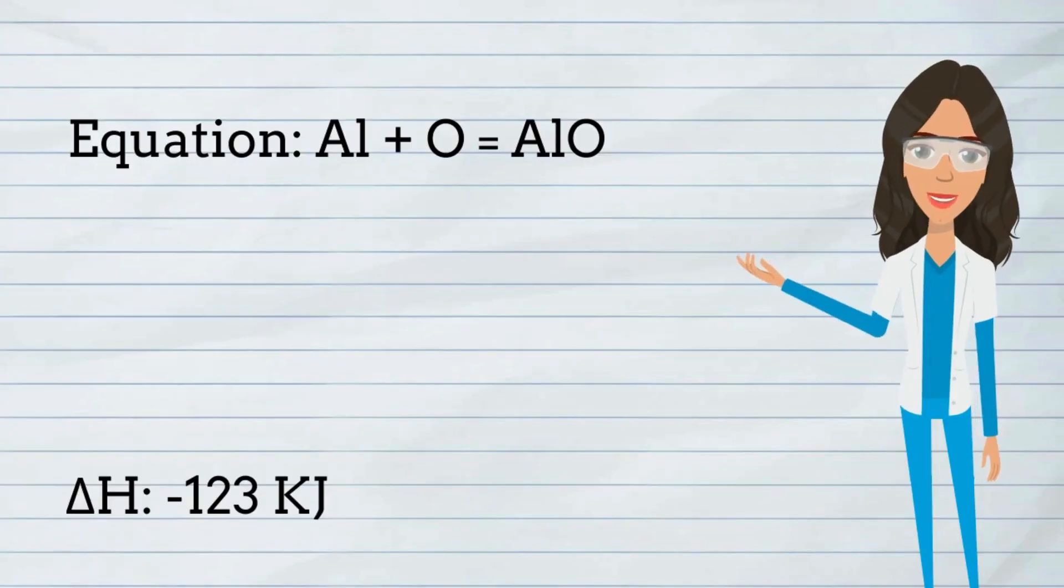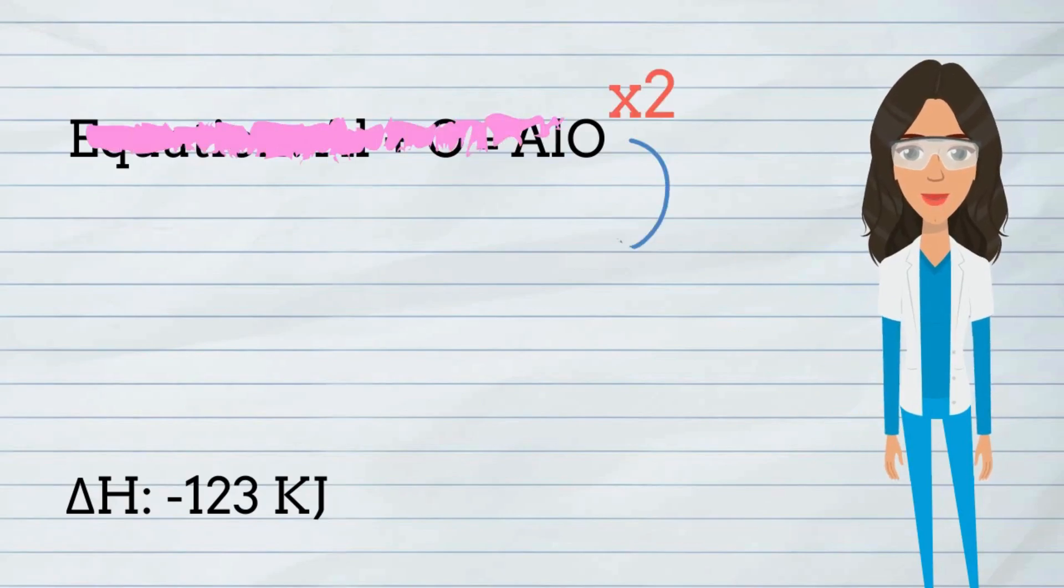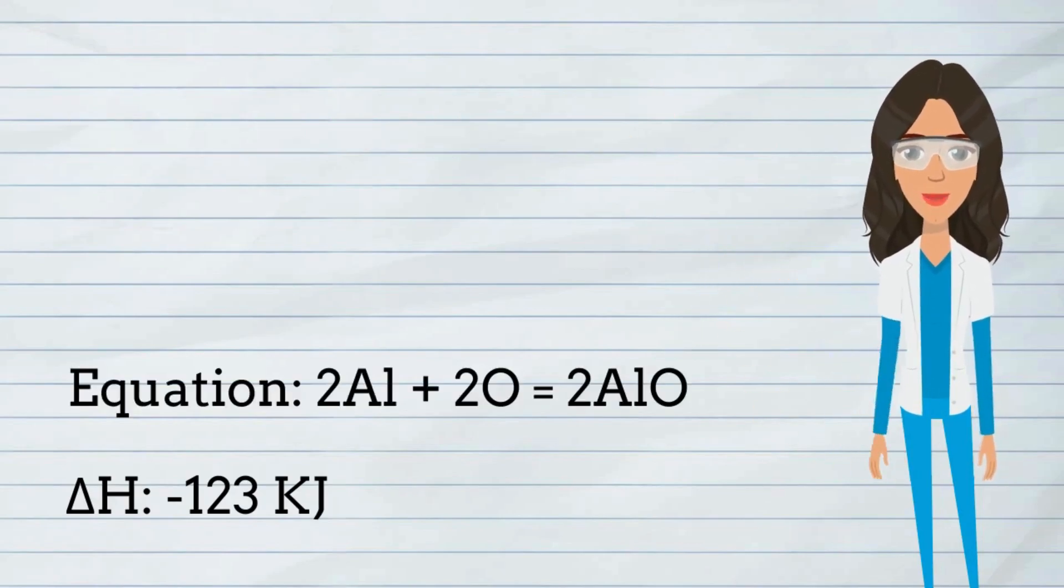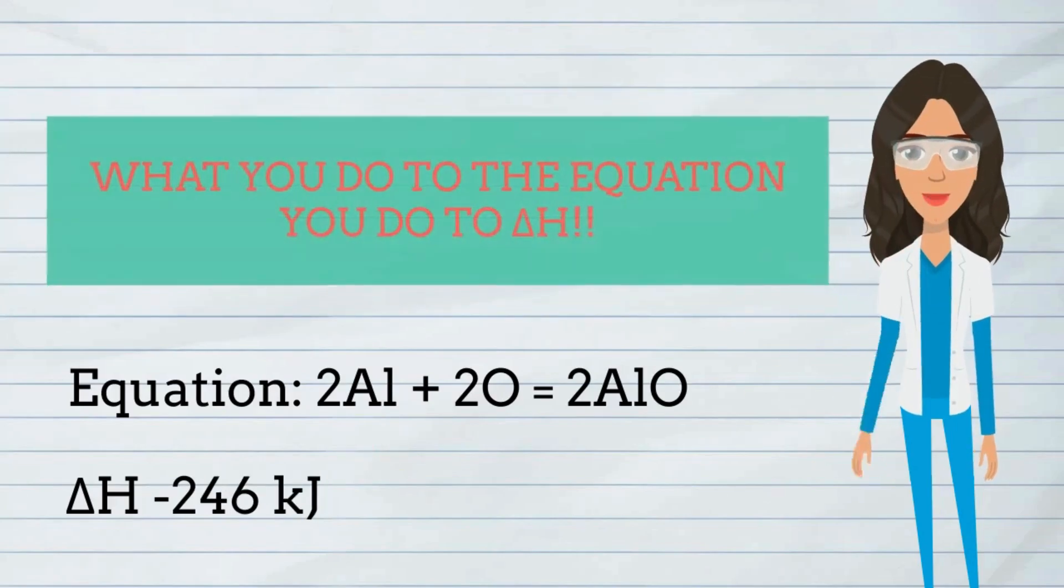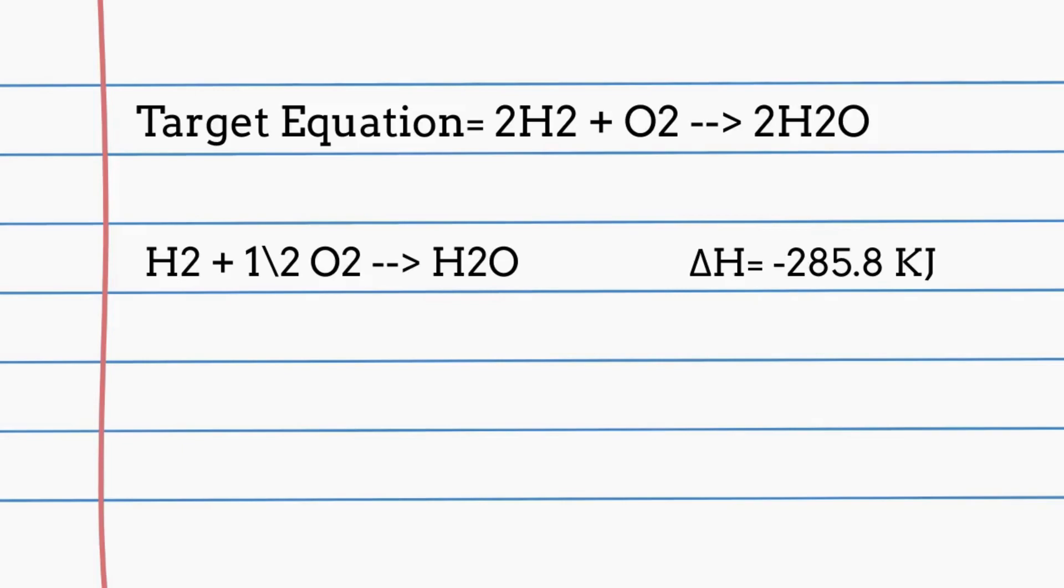This means when thermochemical equations are manipulated to give a new equation, their delta H values are manipulated in the same way. What you do to the equation, you do to delta H. Say we have to multiply this equation by 2 to reach our target equation. We must also multiply our delta H value by the same amount, so 2.